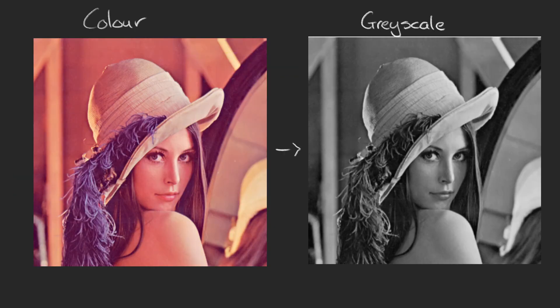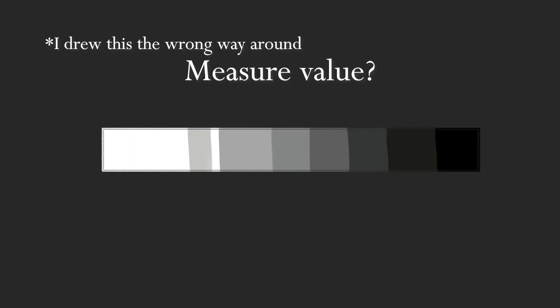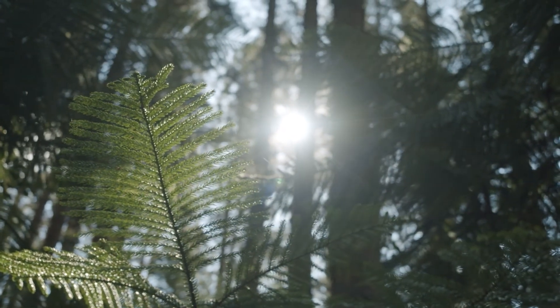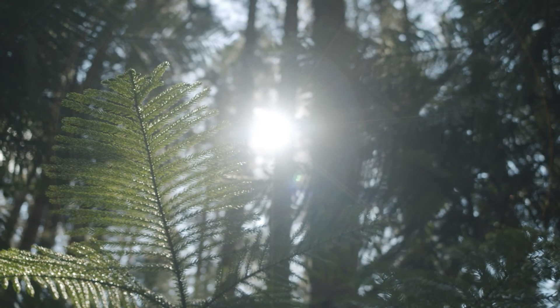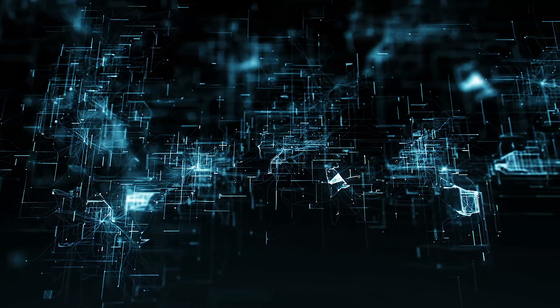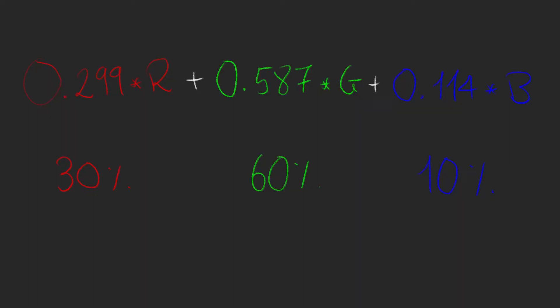But how do we convert RGB scales to a single value? We can measure value on a scale of 0 to 255, where 0 is pure black and 255 is pure white. Remember how we said we perceive green better than any other colour? A computer takes this into account when it tries to imitate human perception. The actual formula a computer uses gives us this: the value of a colour is made up of about 30% of its quantity of red, 60% of the quantity of green, and 10% of the quantity of blue.